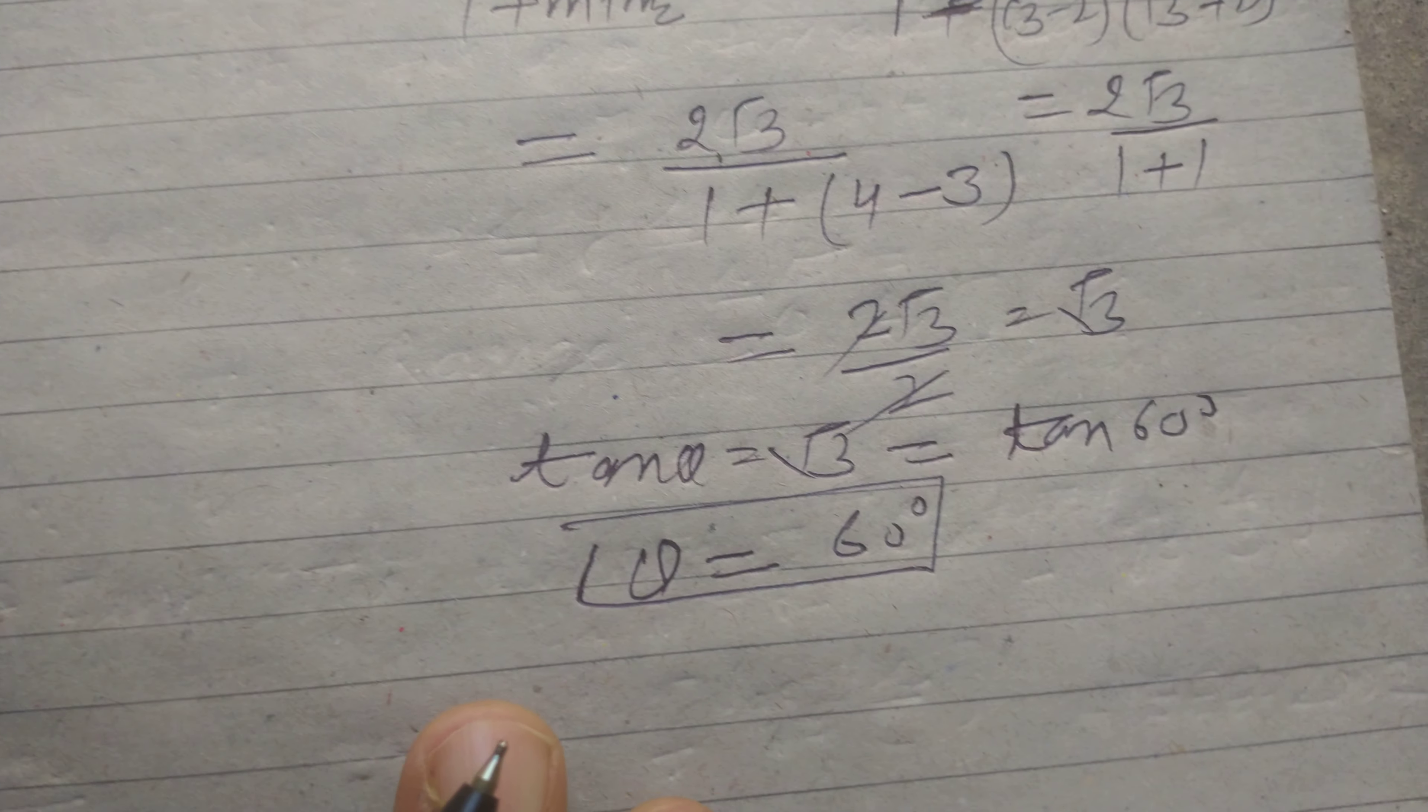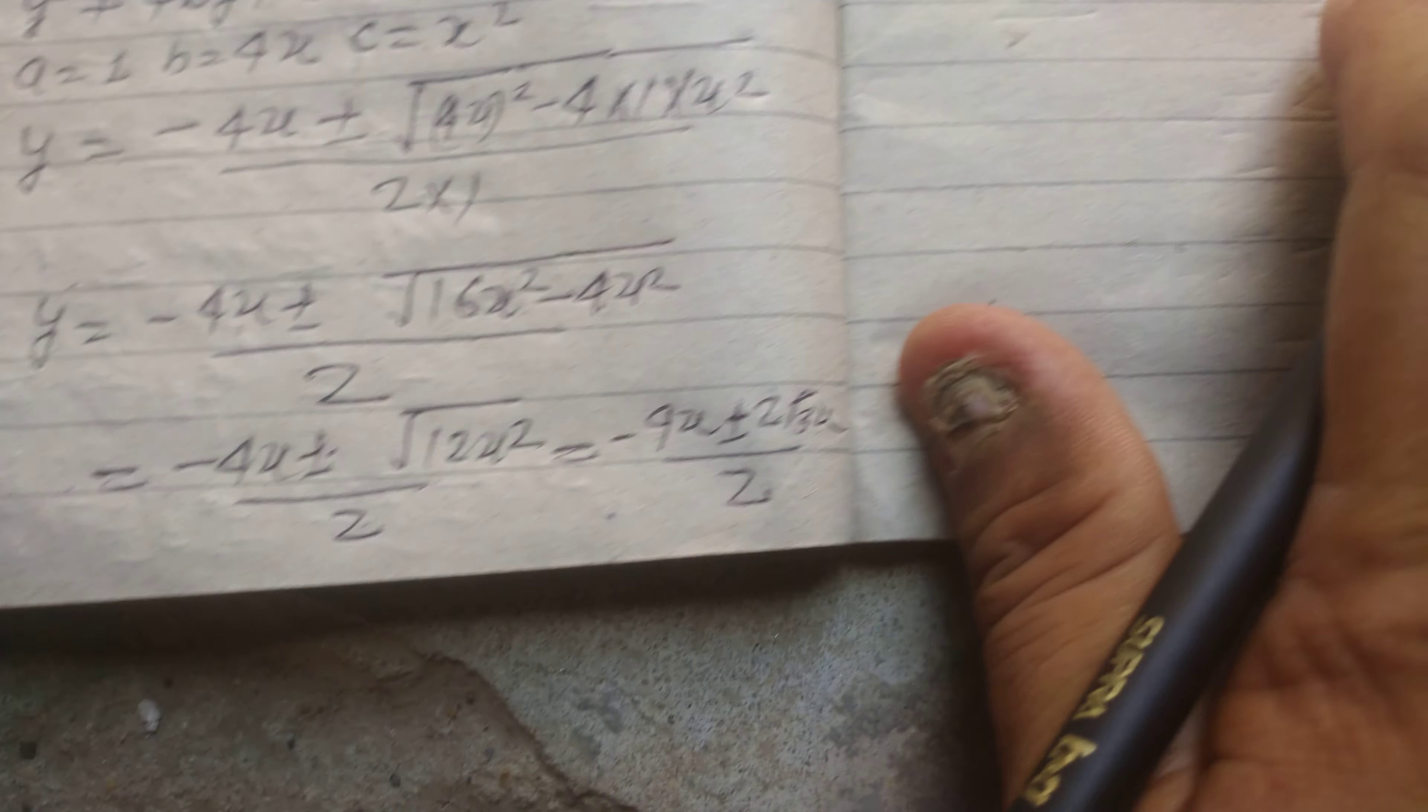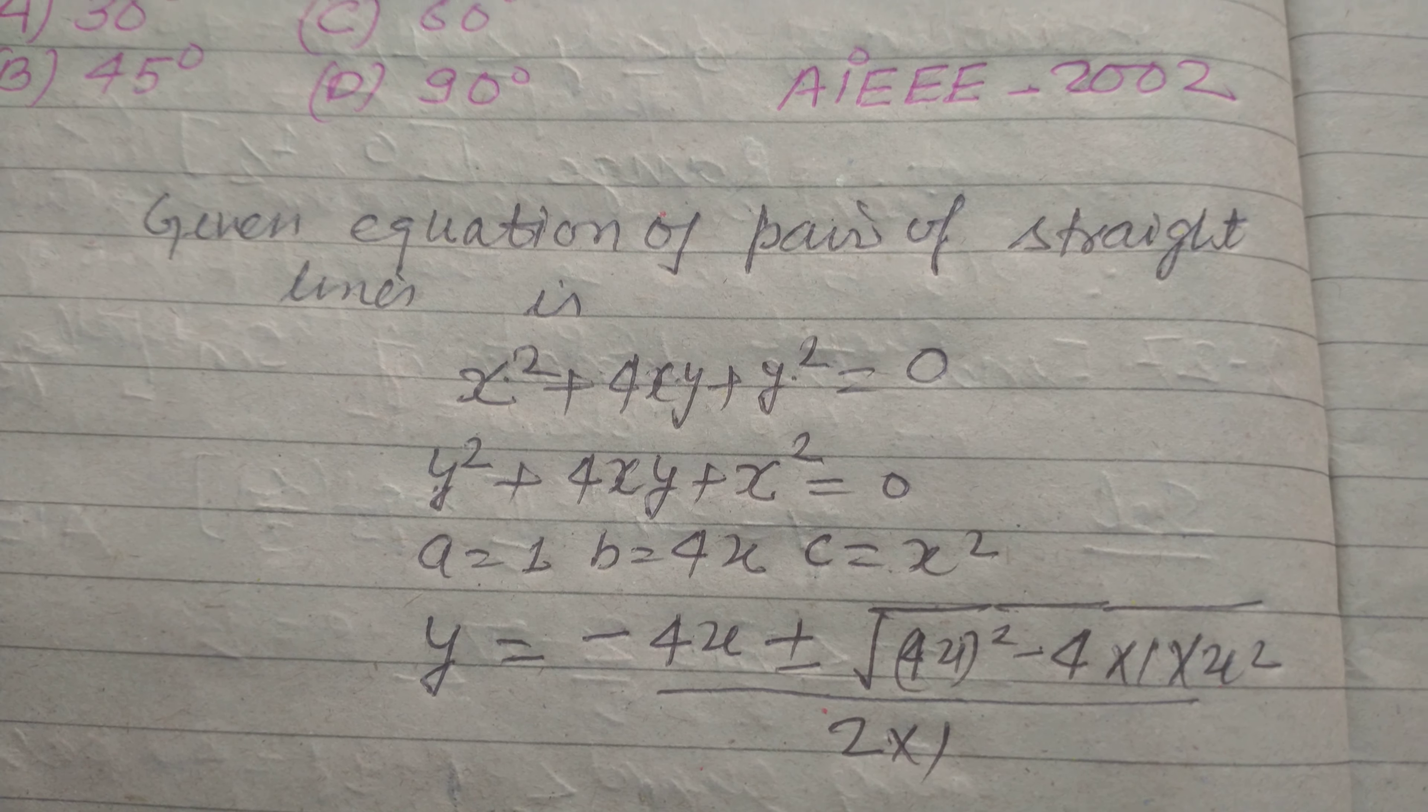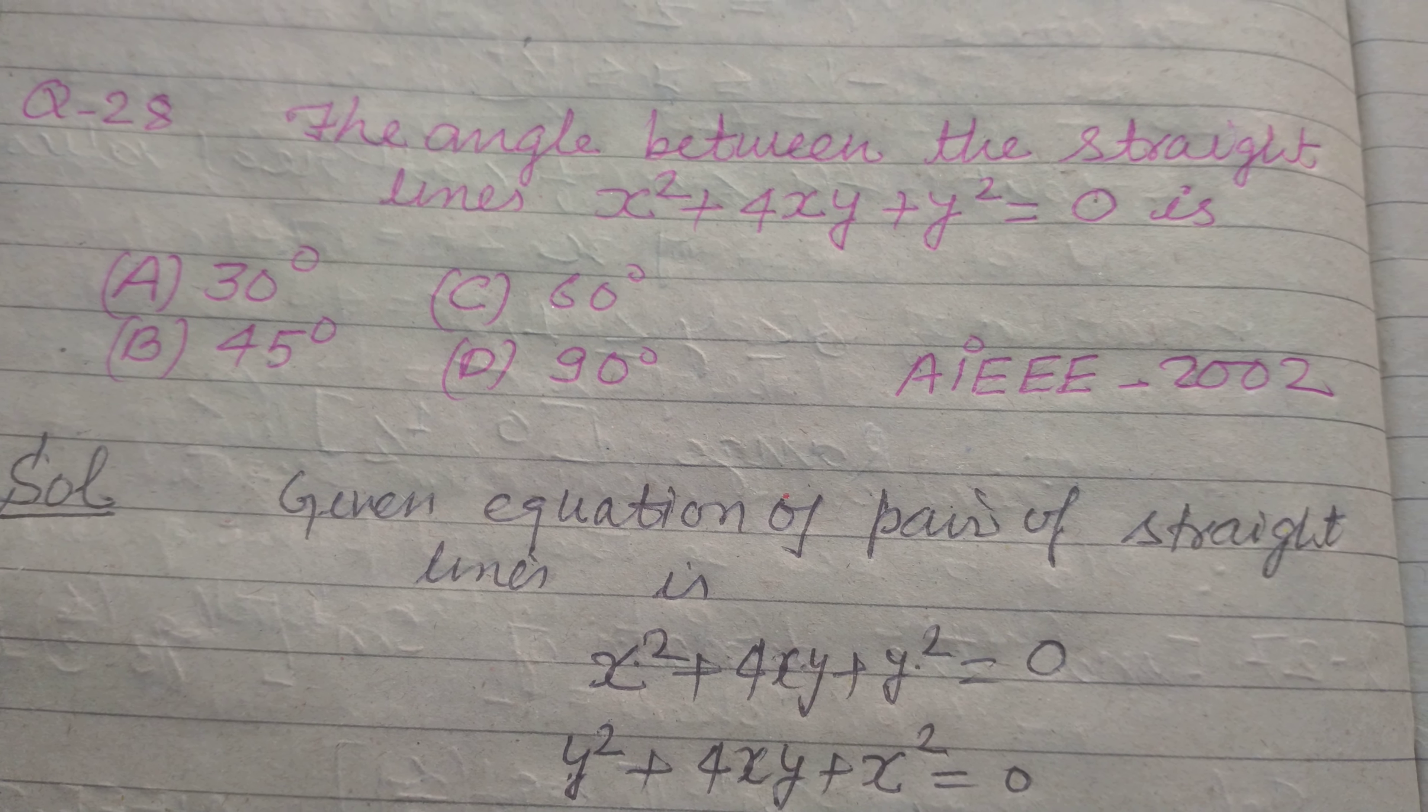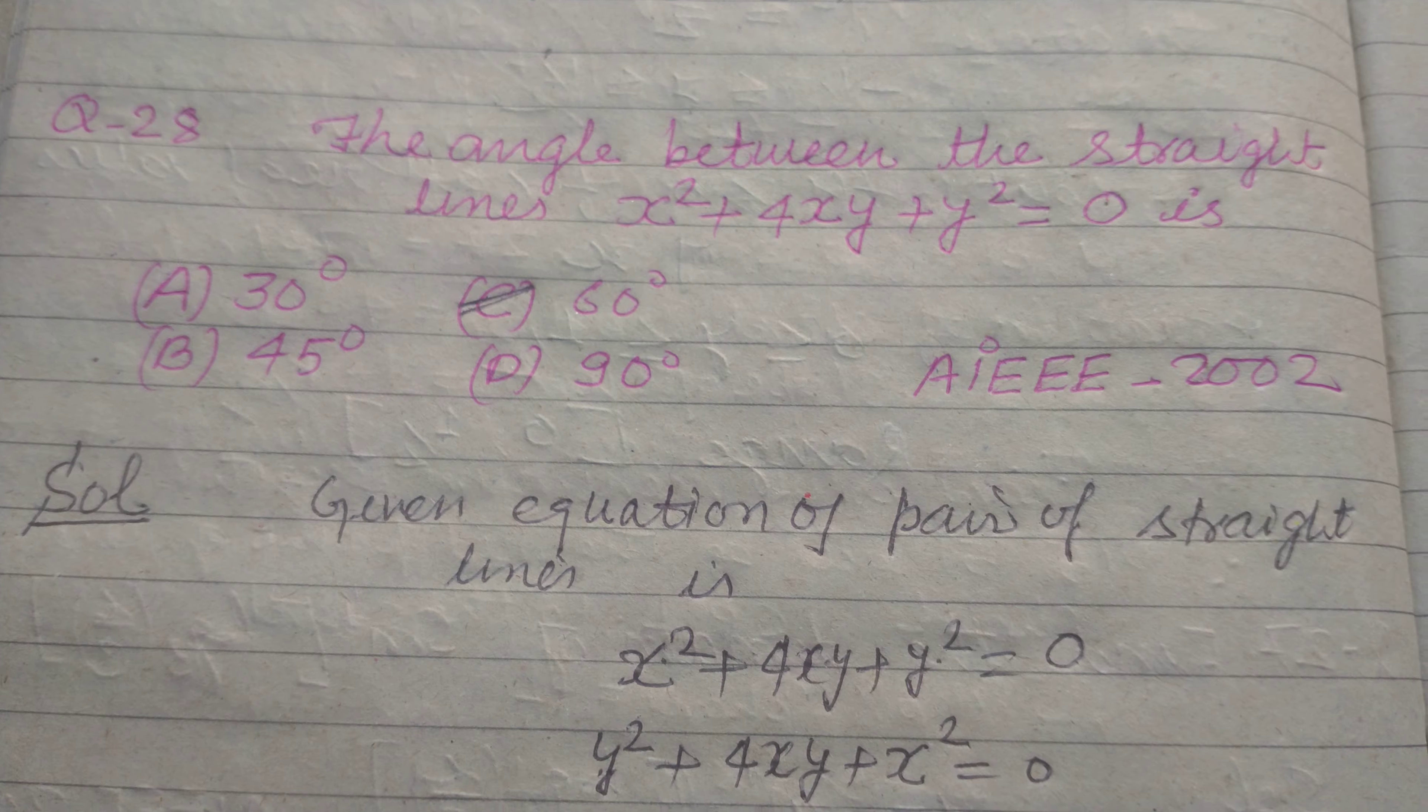So students, in this way we solve this problem by breaking the equation of line into two equations, a pair of lines into two equations, and getting gradient and using tan θ = (m₁ - m₂)/(1 + m₁m₂). So answer to this question is found in option C, which is 60 degrees. I hope you got it.